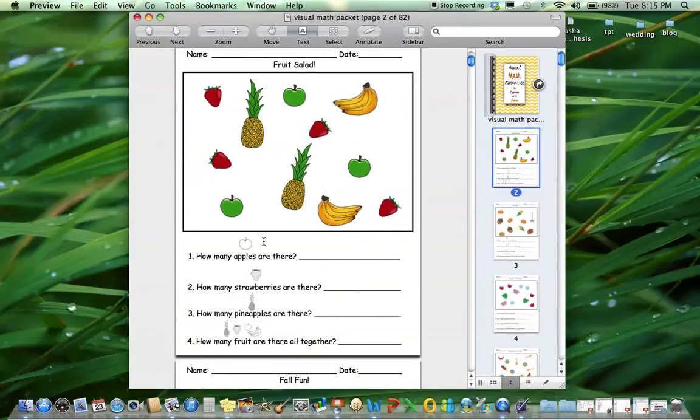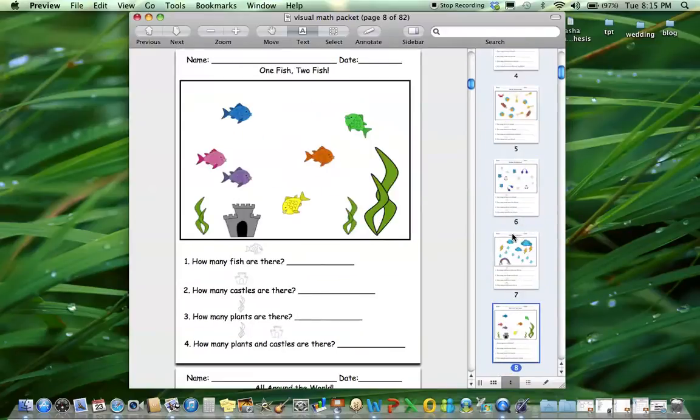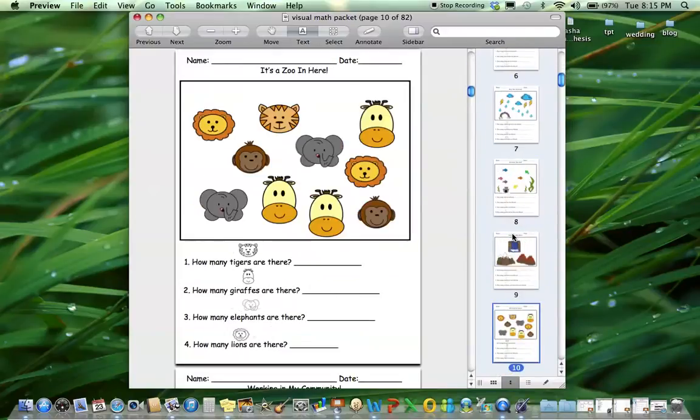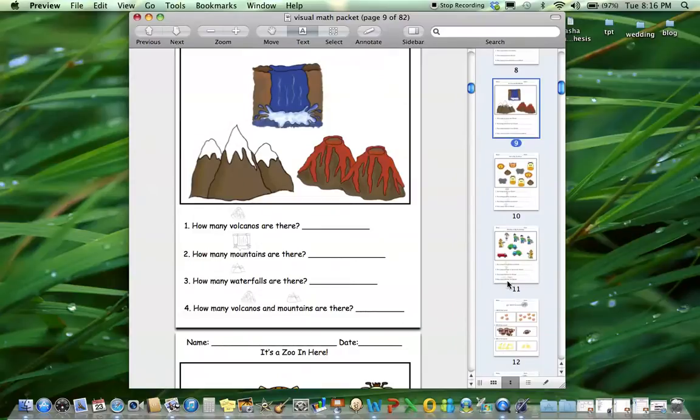These are all visual based, so ideally you could have kids that are non-readers and could be doing these activities. Even if your kid could not read the sentence of how many apples are there, the visual will assist them in identifying these. These are all kind of functional skills as well. There's ten different worksheets like this to identify the different items and some of them are adding, like how many volcanoes and mountains, and there's the visual for each one. So ten different ones of these.